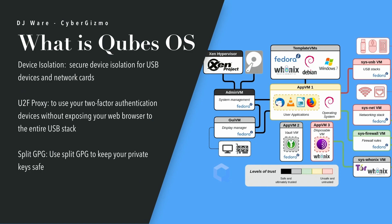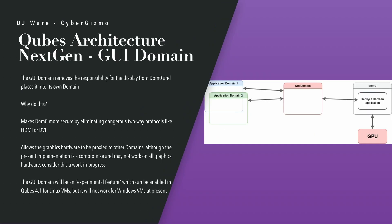I'm not saying it's perfect — nothing is perfect. Split GPG allows you to keep your private keys safe. The GUI domain is something that has always been inside DOM Zero. DOM Zero has a big collection of stuff: the core operating system, core device drivers, all the memory management, and handling of the graphical user interface and audio. That's a lot of code, so they're trying to break that out into its own virtual machine. Besides trimming down domain zero, the big reason is eliminating HDMI and DVI protocols from the graphics.